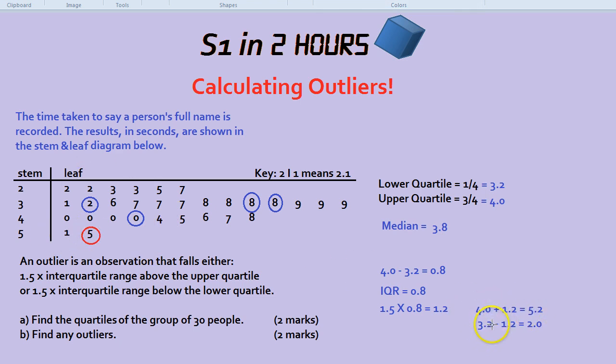Second of all, let's do below the lower quartile. So 3.2 take away 1.2 is 2.0. And no, there was no one who took less than 2 seconds. So there's one outlier and he took 5.5 seconds.